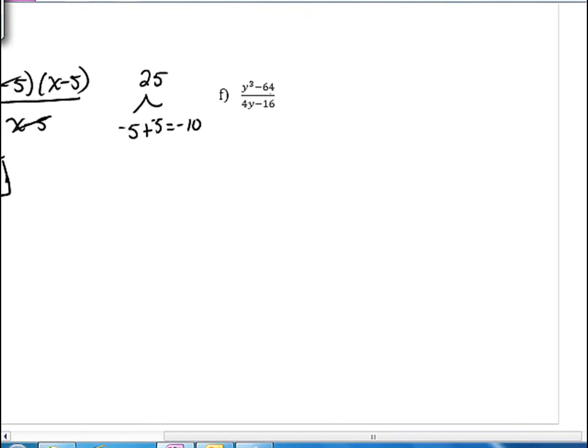In our last example here, we have y cubed minus 64 over 4y minus 16. Y cubed minus 64 is the difference of two perfect cubes, so we can factor that. Remember, we have the formula a cubed minus b cubed equals a minus b times the quantity a squared plus ab plus b squared. So we're going to follow this formula for our factoring. The thing that we would cube to get this 64 is 4.